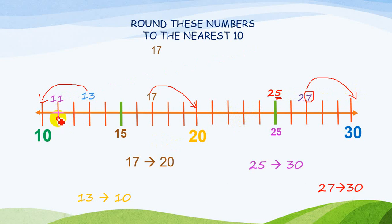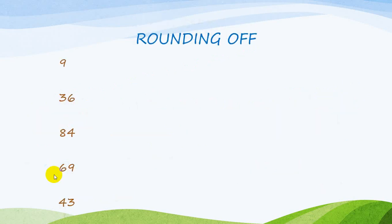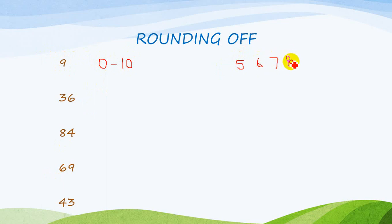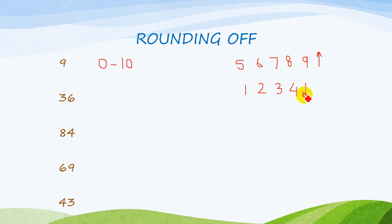Number 11 is quite near to 10, so I'm going to round it down — that means I'm moving back — so it changes to 10. To recap: if the digits 5, 6, 7, 8, or 9 are on the units place, round up and move to the bigger multiple. If I get 1, 2, 3, or 4, round down and move to the smaller multiple of ten.